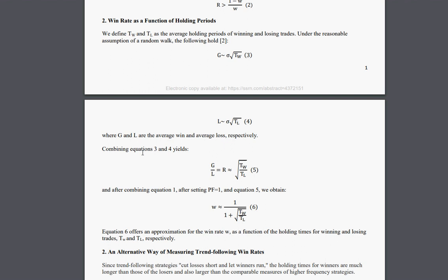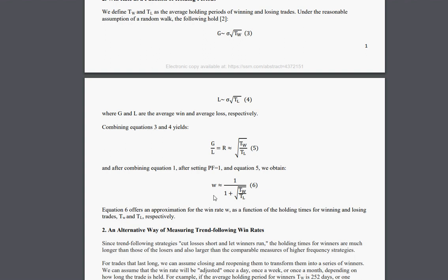So after a few manipulations, we get that the win rate is approximately equal to 1 over 1 plus the square root of the ratio of the average holding period for winning trades divided by the average holding period of the losing trades. This is an approximation, but it's good for our purposes here.